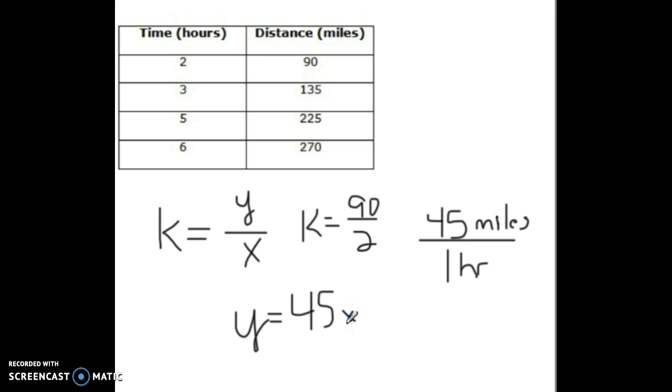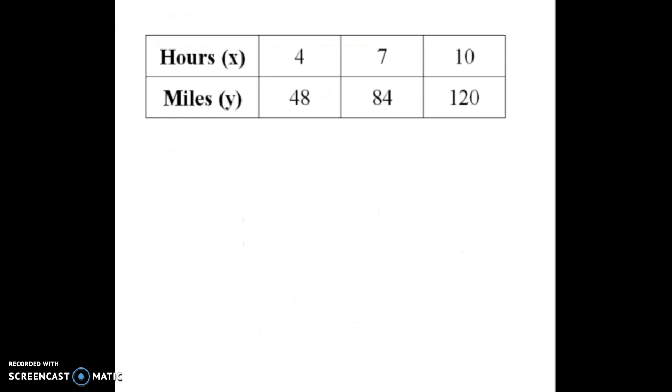So, constant proportionality in a table is just doing y divided by x. The same thing we did on graphs. Here's another example. Now, we look at this and there's x and y. Sometimes these won't be there. You can write those on there yourself.